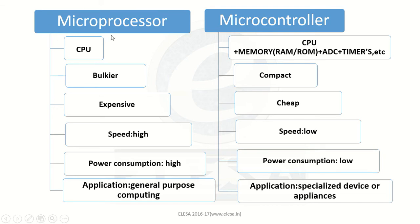As the microprocessor has only a CPU, to build a system we need to connect extra peripherals, so the system becomes bulkier. Whereas in a microcontroller, as everything is inside the microcontroller, we do not need to add many extra things. So the microcontroller is a compact device.